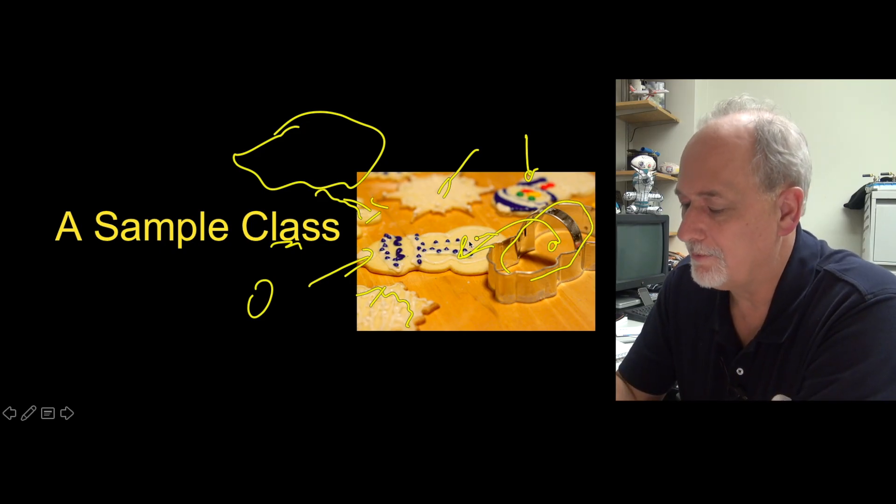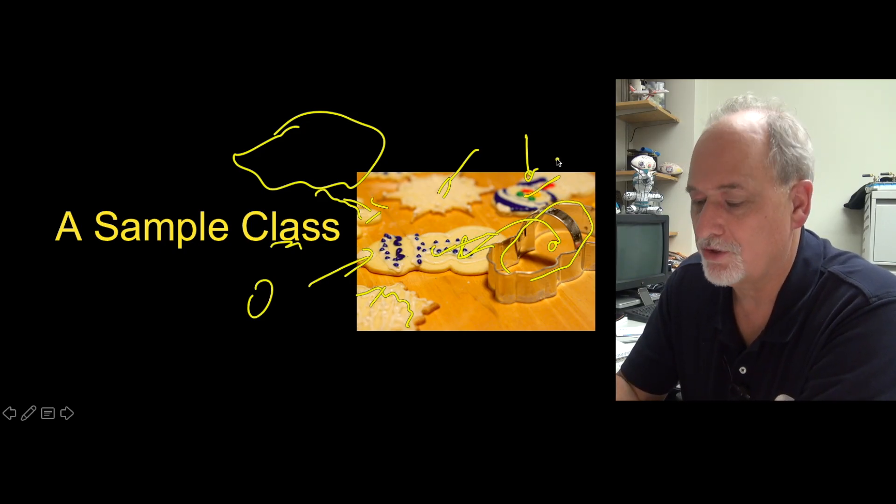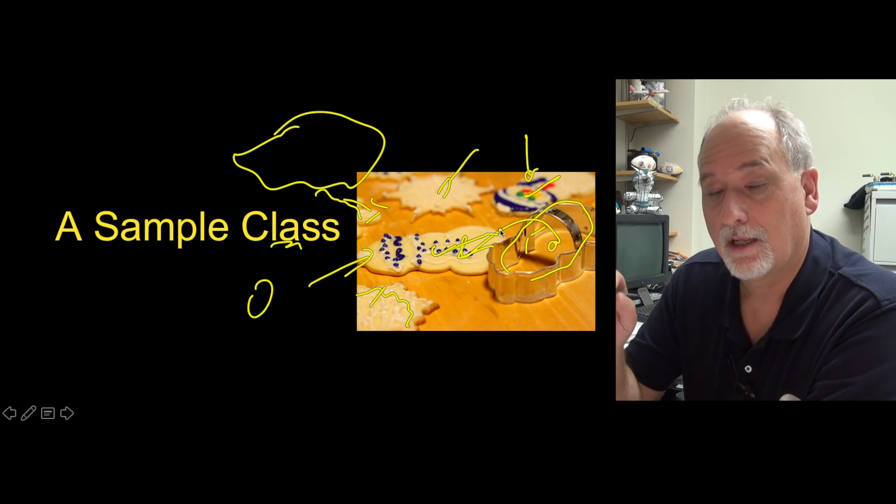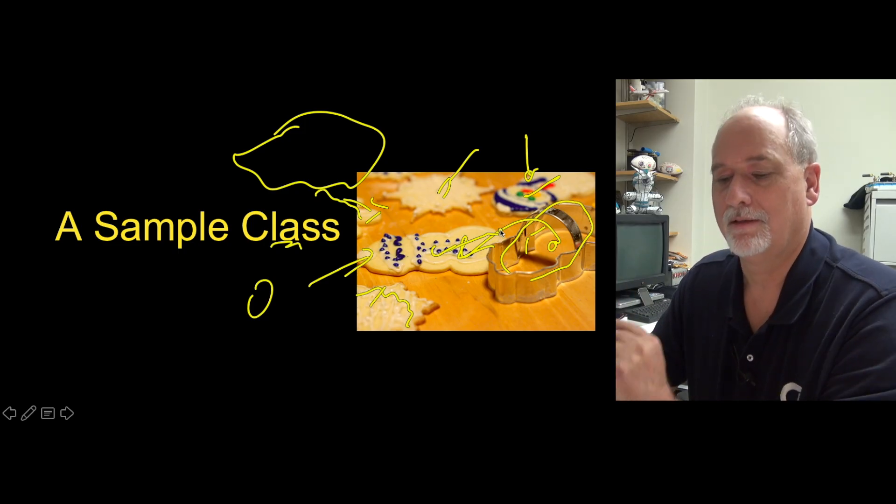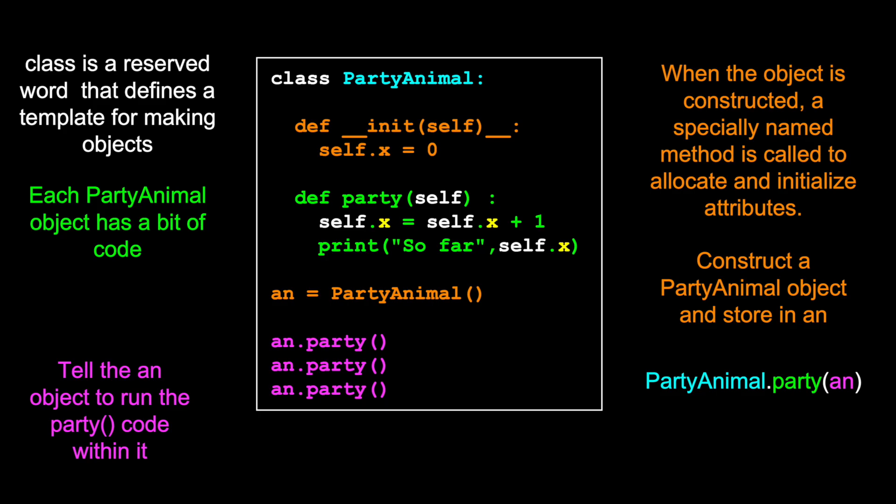But we've got a snowman object and a snowman object and a snowman class. So class is the template. Object is the instance.